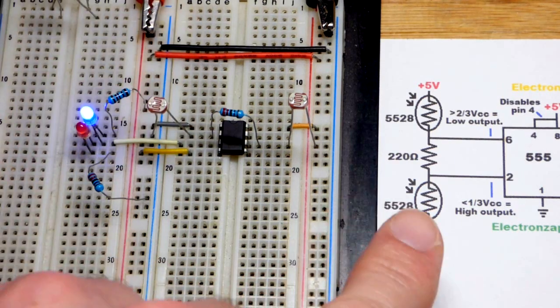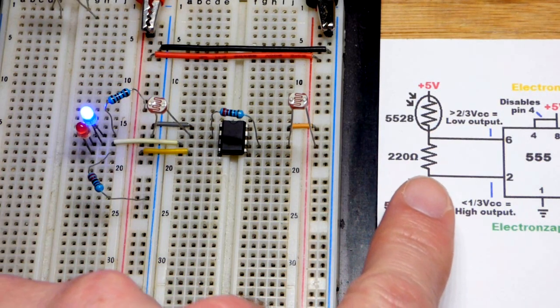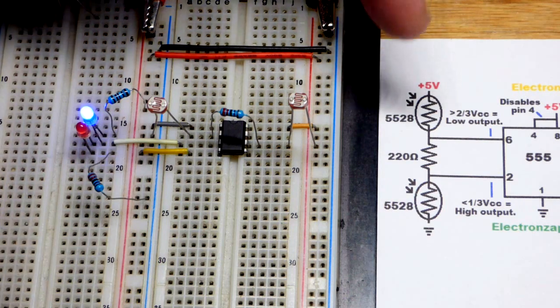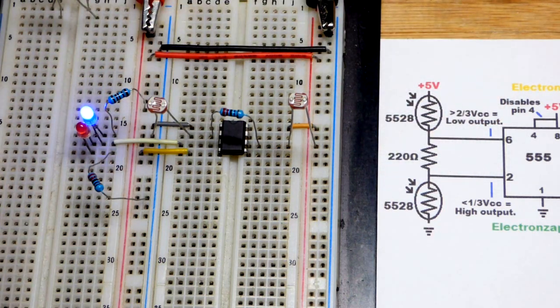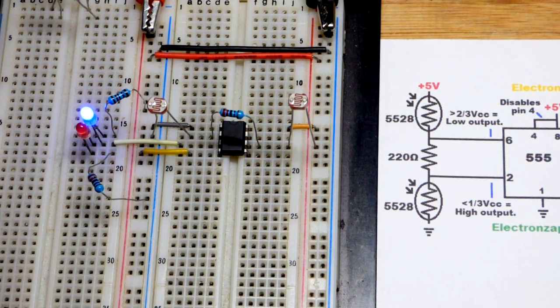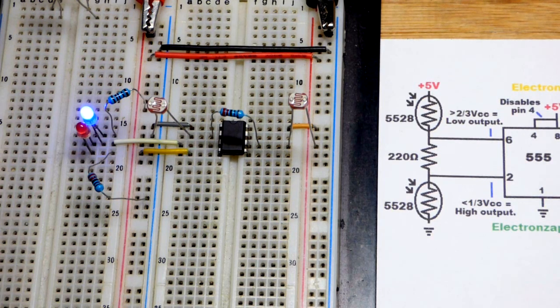We get a pretty good connection to 5 volts, above 2/3 of the supply voltage because it's a voltage divider. That's why it flips back and forth.